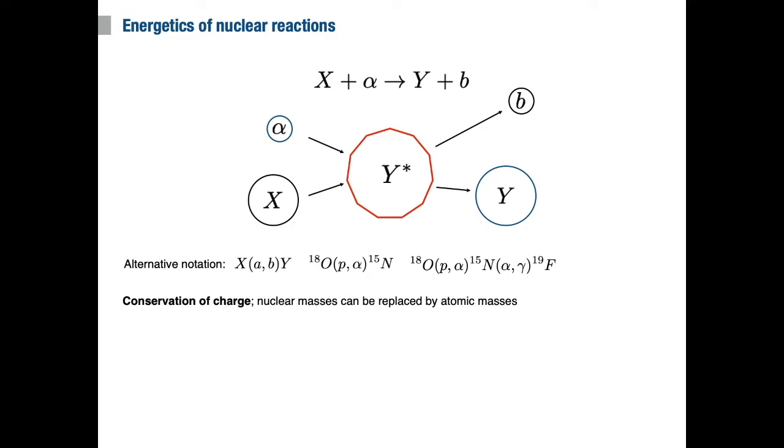Another quantity that is conserved is the number of nucleons. That is, the number of protons and neutrons, or the sum of mass numbers on the left must be equal to the number of nucleons to the right.